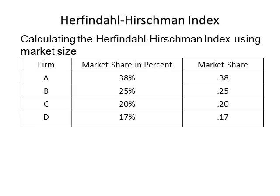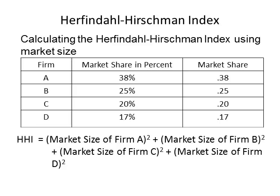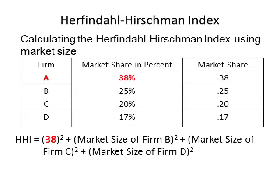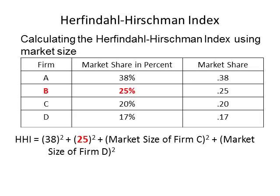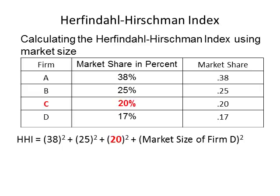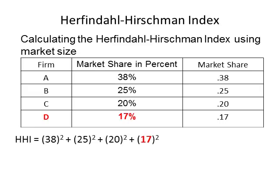Now let's calculate the HHI. First, write down the formula. Since there are four firms, the formula will be: HHI = (market share of Firm A)² + (market share of Firm B)² + (market share of Firm C)² + (market share of Firm D)². Next, substitute in 38% for Firm A, 25% for Firm B, 20% for Firm C, and 17% for Firm D.